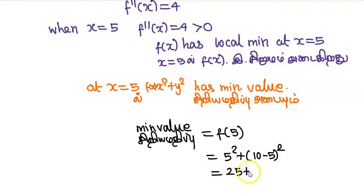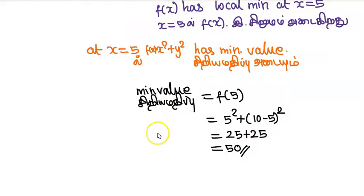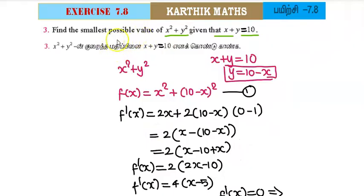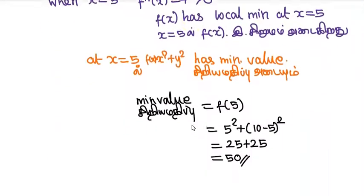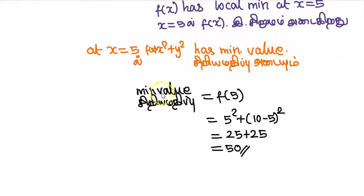5² plus 5² equals 25 plus 25 equals 50. The minimum value is 50. This is the smallest possible value of x² plus y². Thanks for watching.